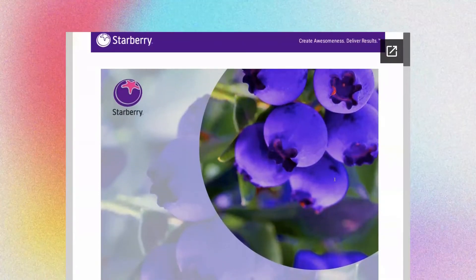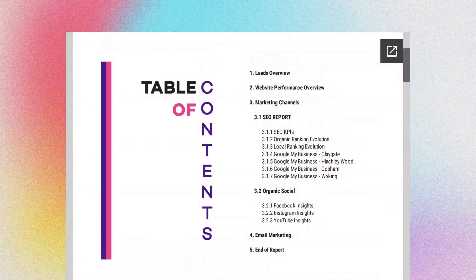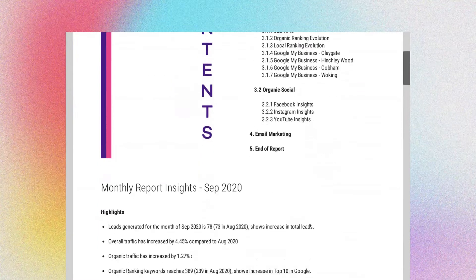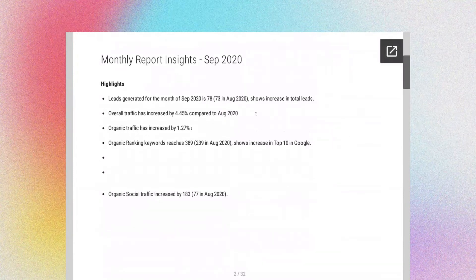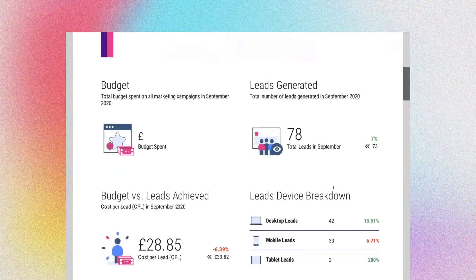Essentially, we've got this live report that is on a link. It covers your lead overview, your website performance overview, all your different channels — so your SEO, your local, your organic social, Facebook, Instagram, YouTube — and if you're running email marketing, that's covered as well. If there's a web service or an API, we can pull it in. This gives our digital marketing managers the opportunity to provide you with an executive summary of all the highlights and lowlights.